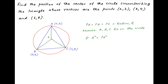Therefore, R² is equal to PA² is equal to PB² is equal to PC². Now let the coordinates of the centre of the circle, that is the point P, be (H, K).